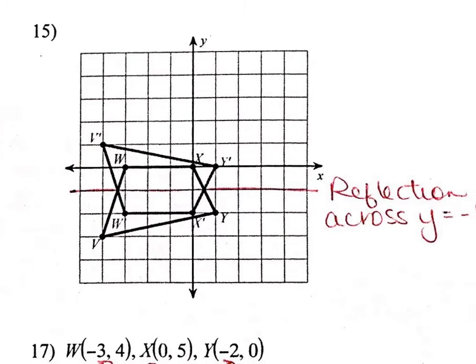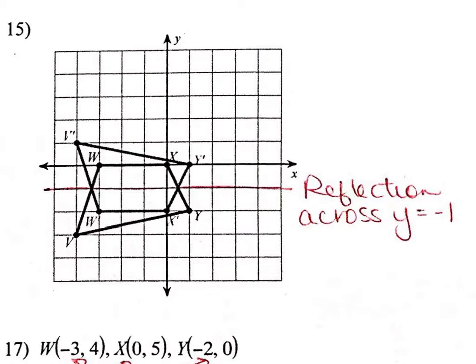Question 15. Again, a reflection. This one's a little weird because we didn't talk about any specifically like this, but you can do the same thing. Map y to y and look for the middle. X to x and look for the middle. W to w prime, right? V to v prime. And when you do that, you get this line that cuts across. Remember, lines that cut through the y-axis are y equals lines. And this is cutting through the y-axis at negative 1. So that's y equals negative 1.